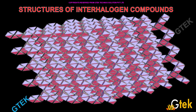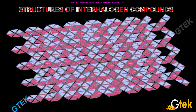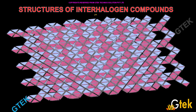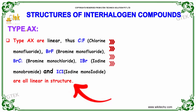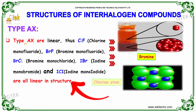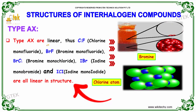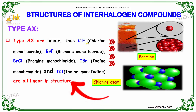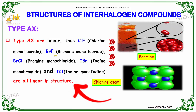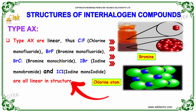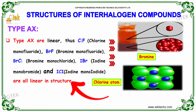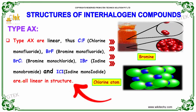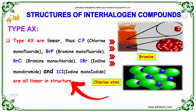Let's discuss the structures of interhalogen compounds. Type AX compounds are linear. Chlorine monofluoride, bromine monofluoride, bromine monochloride, iodine monobromide, and iodine monochloride are all linear in structure.